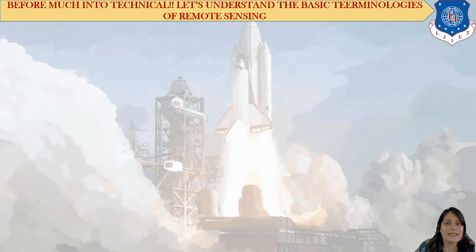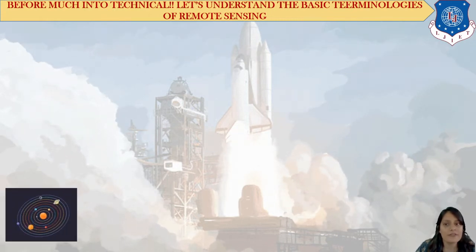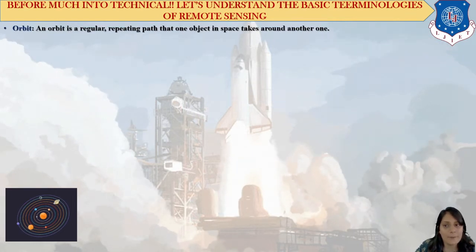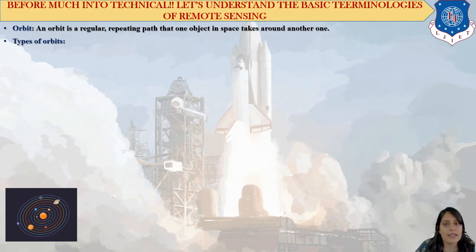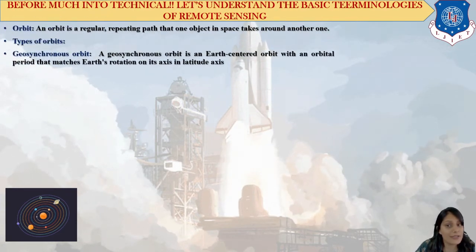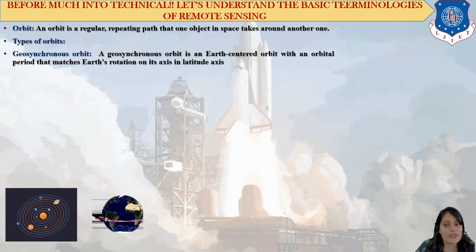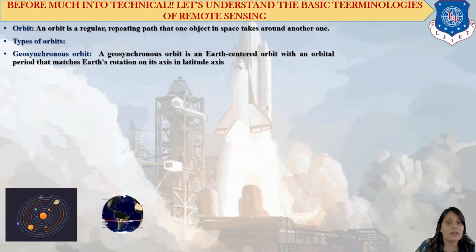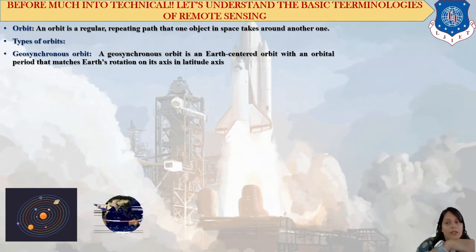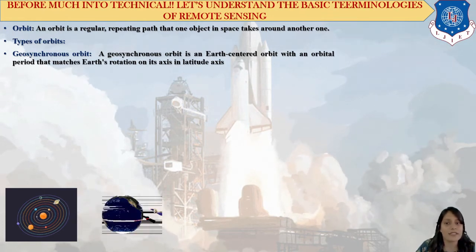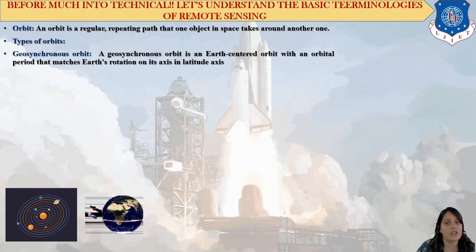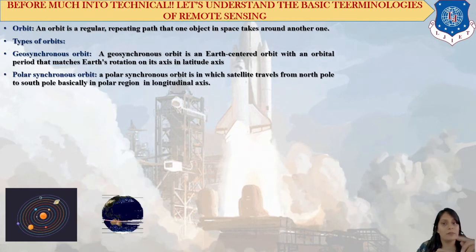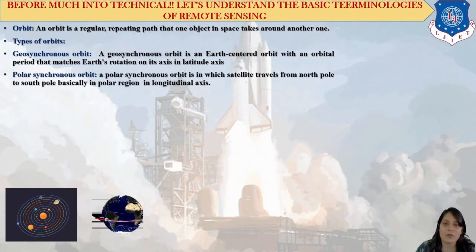Before going further into detail, let's discuss the basic terminologies of remote sensing. The very first term is orbit — an orbit is a regular, repeating path that one object in space takes around another. There are two types of orbit: geosynchronous orbit and polar synchronized orbit. A geosynchronous orbit is an Earth-centered orbit with an orbital period that matches Earth's rotation — as Earth rotates, the satellite rotates — operating on its horizontal axis. A polar synchronized orbit operates on its vertical axis.